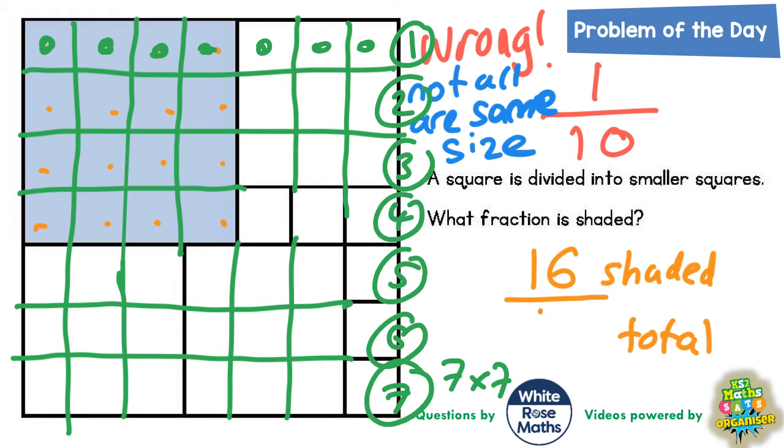So the final answer is 16 out of 49. So what fraction is shaded? 16 out of 49.